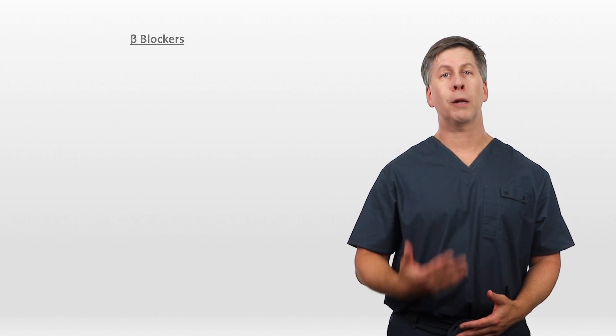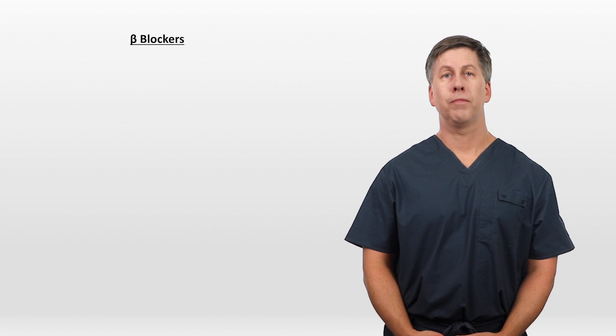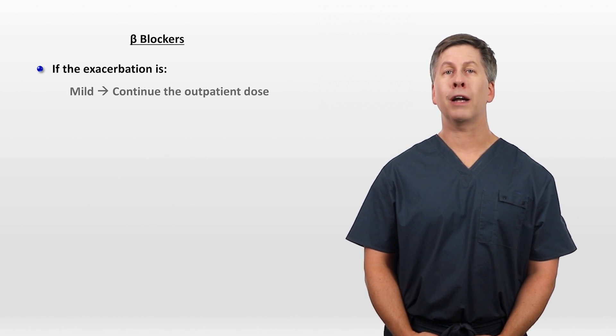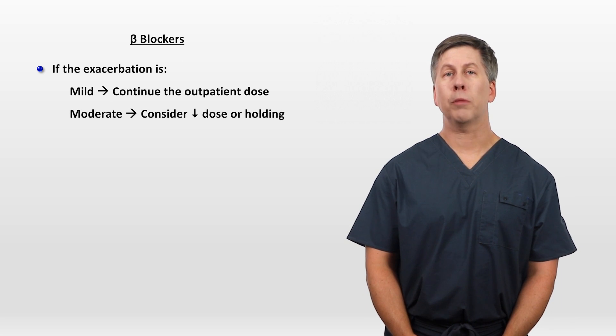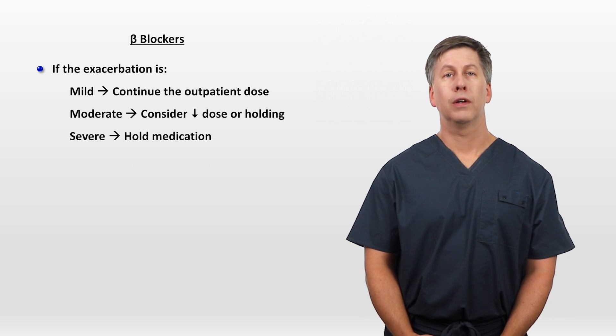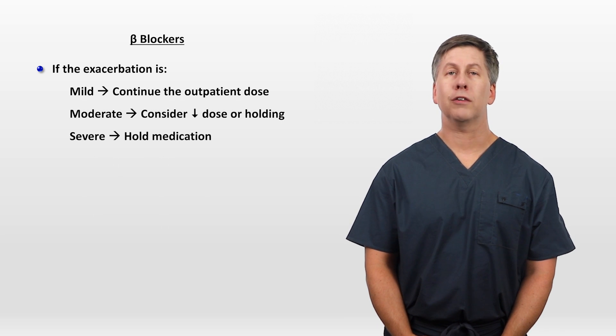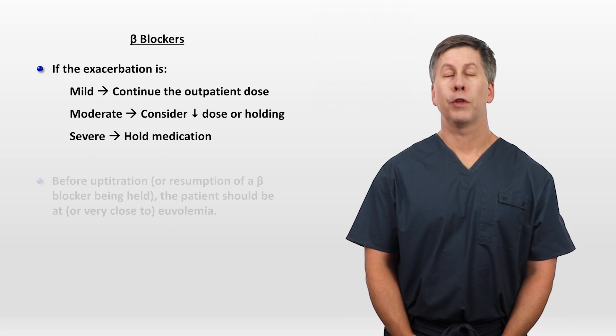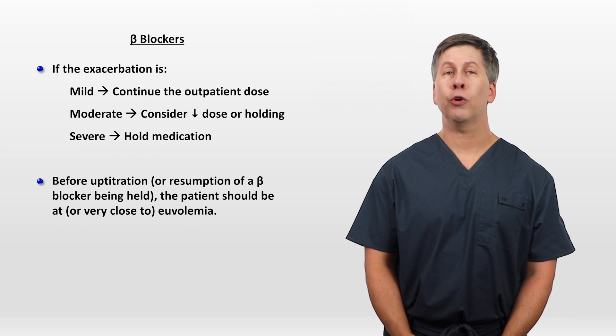What should we do with a patient's beta blocker when they are admitted with heart failure? If the exacerbation is mild in severity, continue the outpatient dose. If it is moderate, consider decreasing the dose or holding the med. And if severe, definitely hold it. The distinction between mild, moderate, and severe is of course subjective and arbitrary. Before uptitration or resumption of a beta blocker being held, the patient should be at or very close to euvolemia.